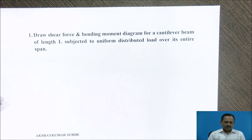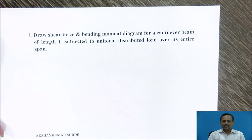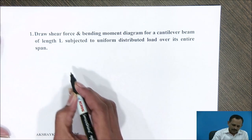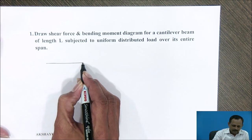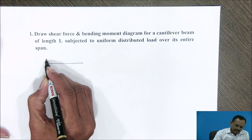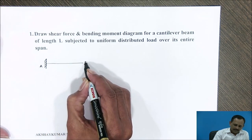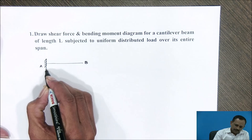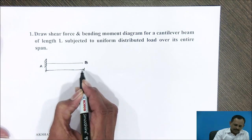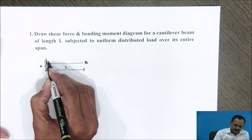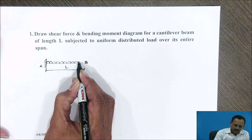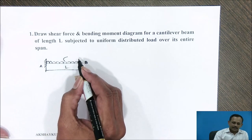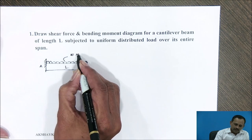We will discuss today how to draw Shear Force and Bending Moment Diagram for a beam of length L subjected to uniform distributed load over its entire span. Consider a cantilever beam whose end A is fixed and free end is B. The length of the beam is L and this beam is subjected to uniform distributed load where the rate of loading is W N per meter.